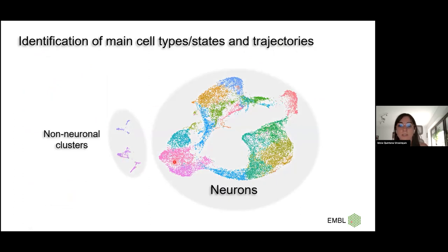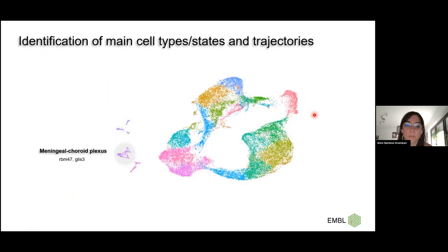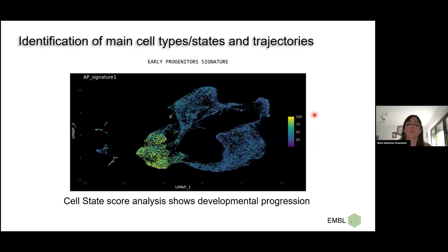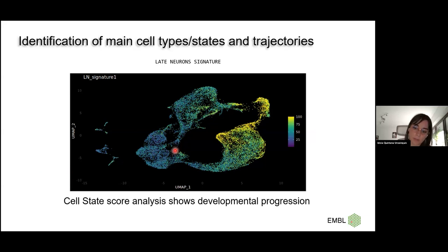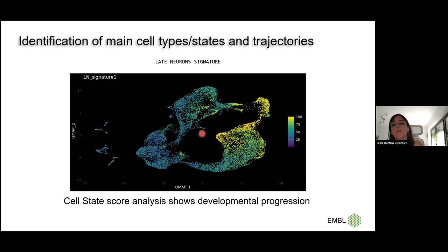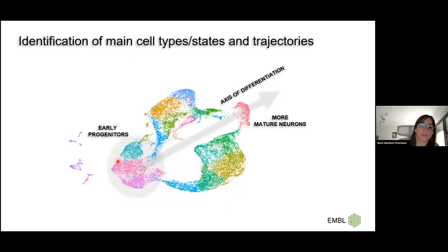In characterizing this dataset, we have some non-neuronal clusters, including meningeal and choroid plexus, astrocytes, and blood and vasculature. On the neuronal side, we looked at cell-state scoring — cells scoring high for apical progenitors, secondary progenitors, early neurons, and late neurons. There is a clear trajectory and axis of differentiation from left to right across the UMAP.